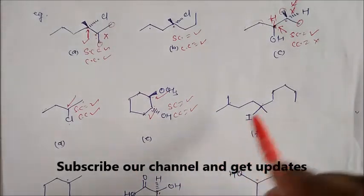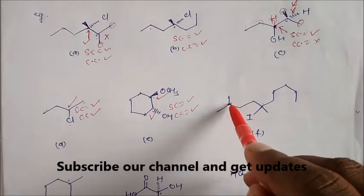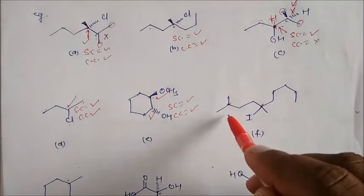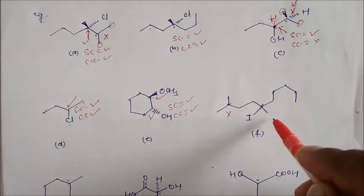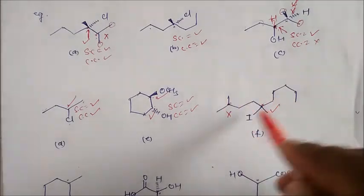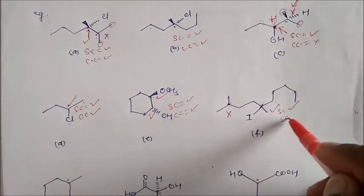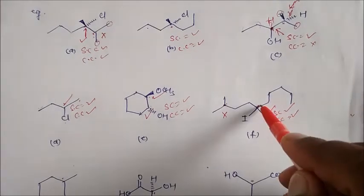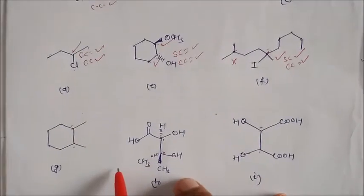Now in this case, we have three points. There are two identical points and two different points — so this is not a stereogenic center. But here is your stereogenic center, because groups 1, 2, and the two whole groups are different. So the stereogenic center is here, but is the chiral center also there? Yes, chiral center is present here, but not at the other position.